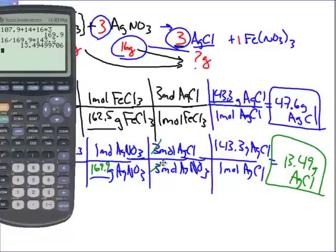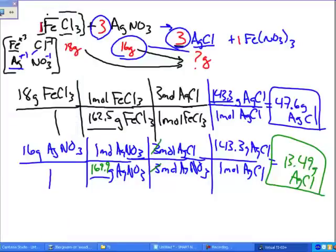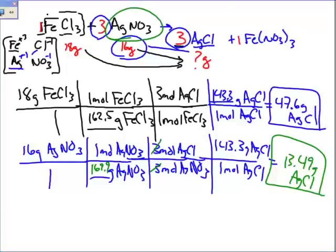13.49 wins — it's the smaller number, so I can only make 13.49 grams of AgCl, not 47.6. The limiting reactant is the one you run out of first — that's AgNO₃. It's the limiting reactant. FeCl₃ is the excess reactant.